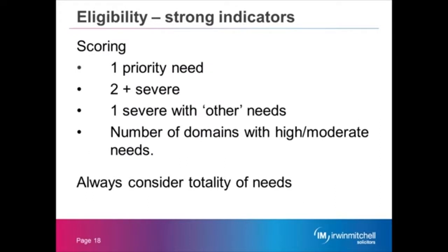When the assessment has taken place, how will eligibility be determined? It is based on the facts of each individual case and a decision will always be taken on a case-by-case basis. In general terms, a good indicator of being eligible for CHC funding is when an individual has been identified as having one priority need, two or more severe needs, or perhaps one severe need with other needs of a high or moderate nature, or a number of domains with high or moderate needs. There is no one-size-fits-all when it comes to determining eligibility.